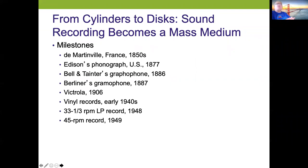It came about from cylinders to discs in terms of sound — how recording became a mass media. The milestones were really in the 1850s with De Martinville from France. These are all things you should remember for the objective tests. Edison's phonograph in the US was 1877, and then Bell and Tainter's graphophone in 1886, and Berliner's gramophone in 1887. The Victrola was very popular, and you'll see a lot of images of that in the book.